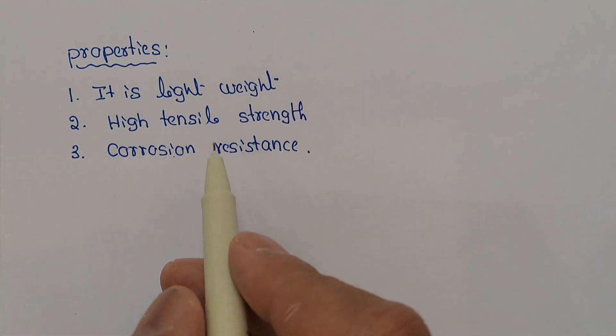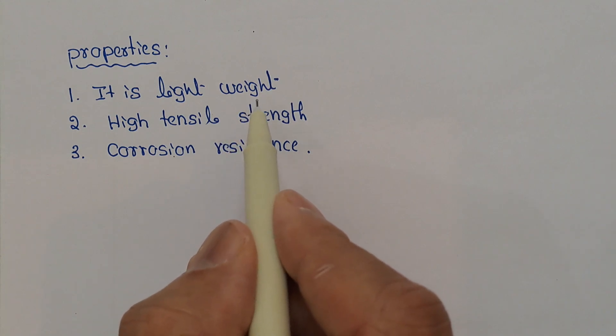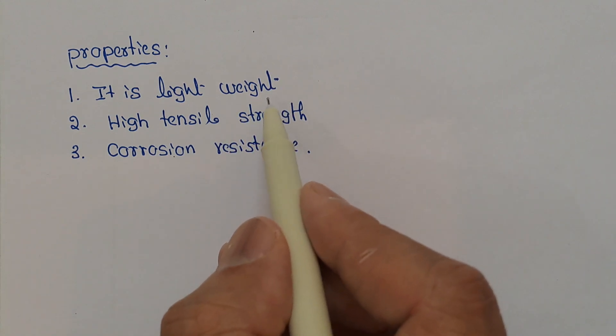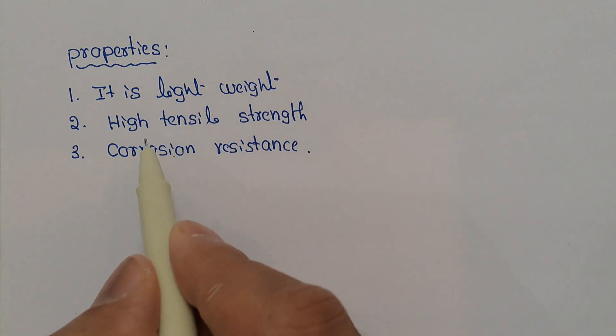Now let us see the properties of Kevlar fiber. It is a lightweight synthetic polymer. Therefore, it is used in aerospace engineering to make aircraft body parts. It has very high tensile strength and it is known for good corrosion resistance.